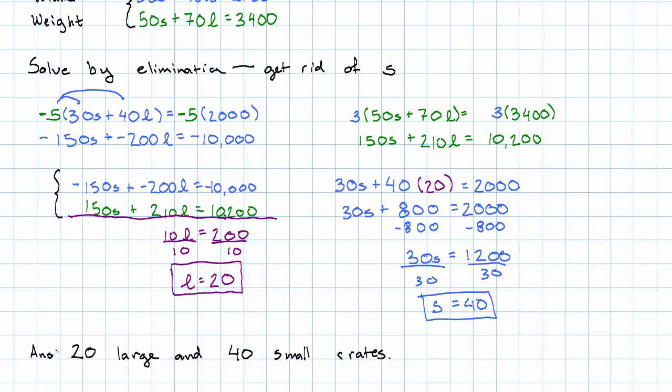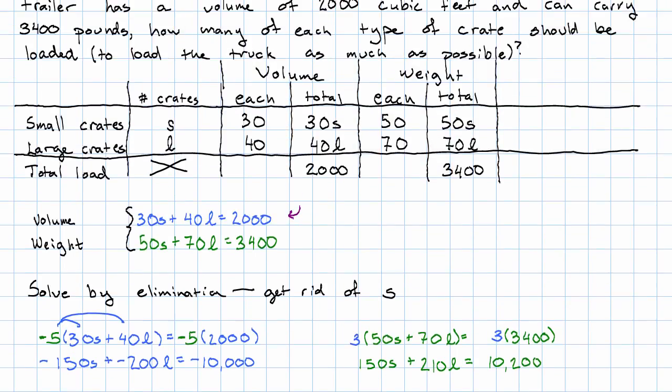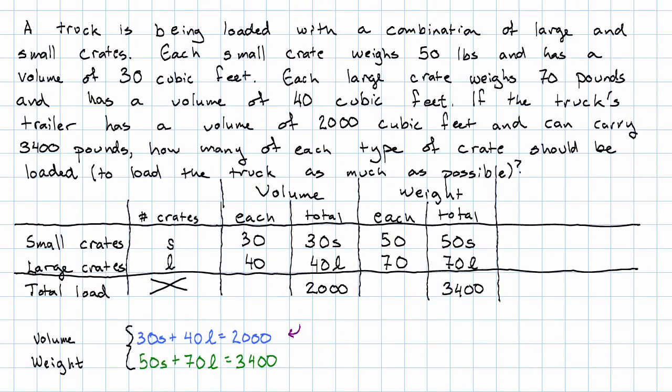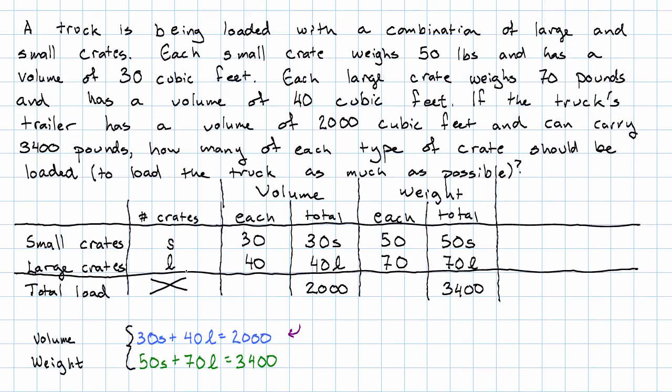How was this problem different from the previous one? Instead of just being given a total number, we had two different qualities that we were mixing together. In this case, the volume and also the weight.